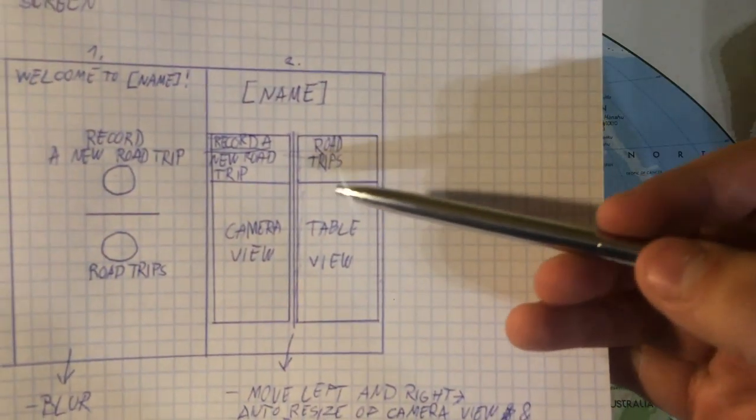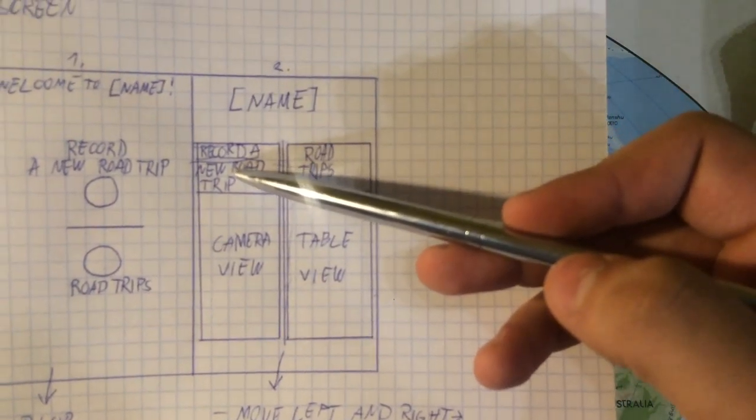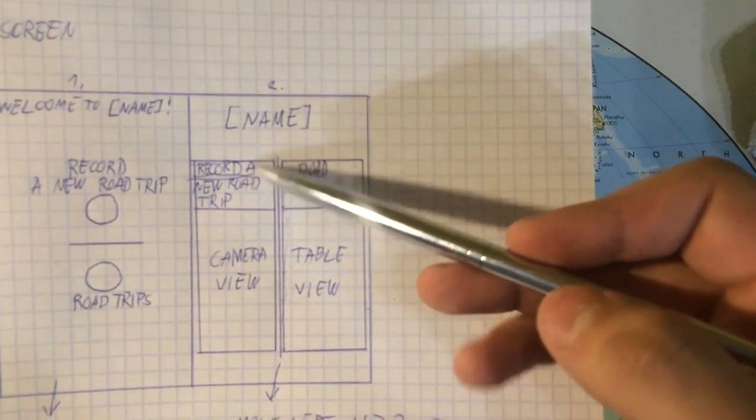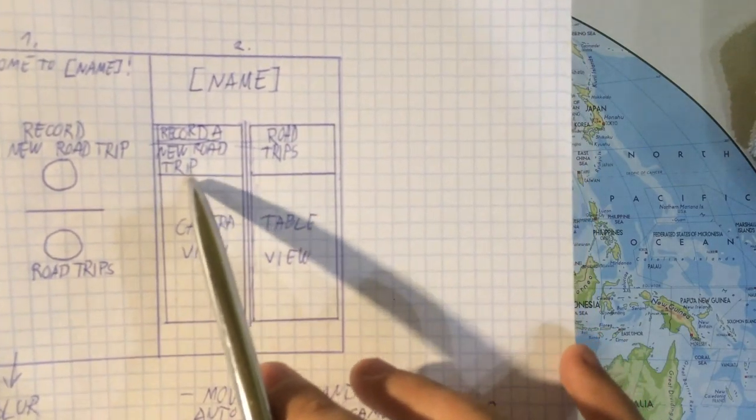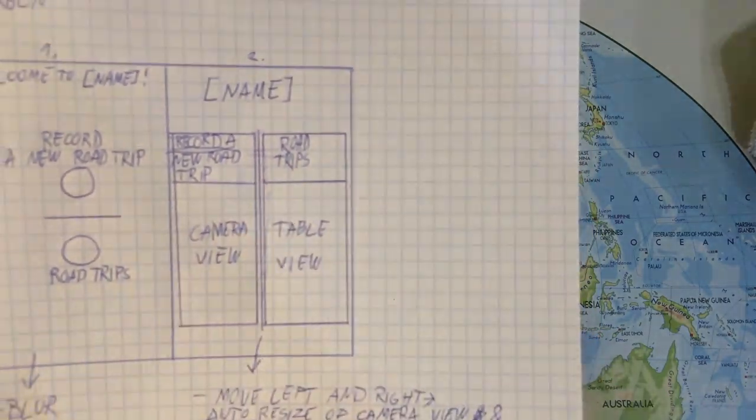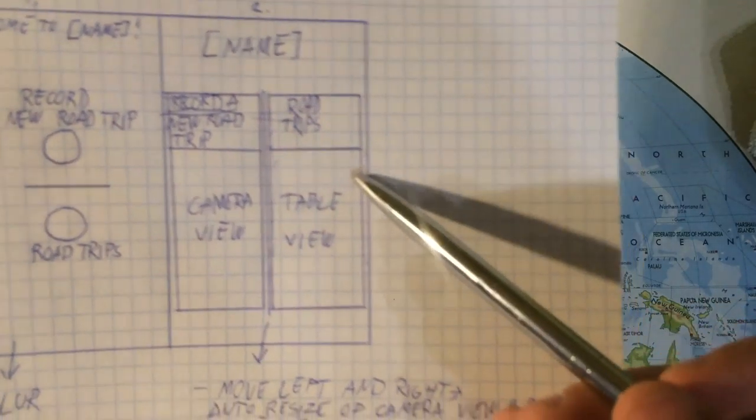We're going to have this middle separator. On the left side, which will be smaller (this is just drawn larger so you can see better), there's the label 'recording your road trip' and 'road trips.' Here we'll have the camera view in real time, and a table view of the road trips that you did.